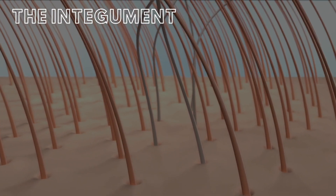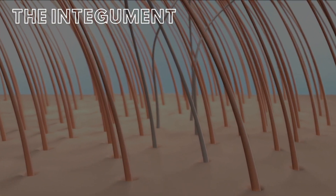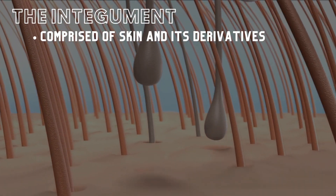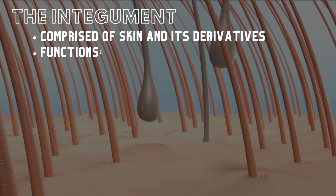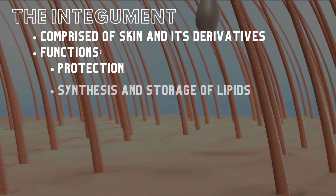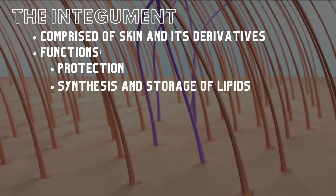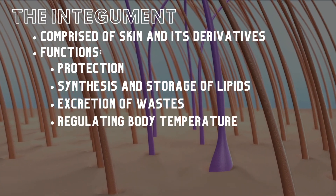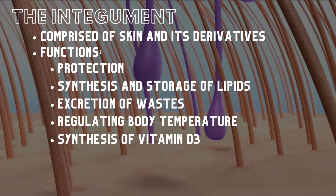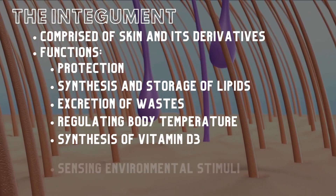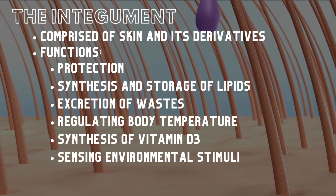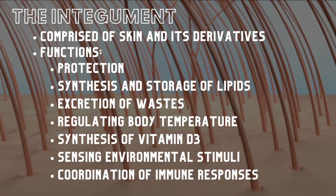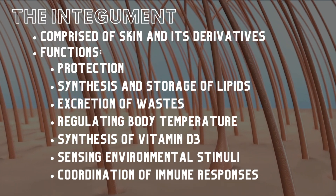The integumentary system, or the integument, is made up of skin and its derivatives. The functions of the integument are protection, synthesis and storage of lipids, excretion of wastes, regulating body temperature, synthesis of vitamin D3, sensing environmental stimuli, and coordination of immune responses such as those of skin cancers and other pathogens of the skin.